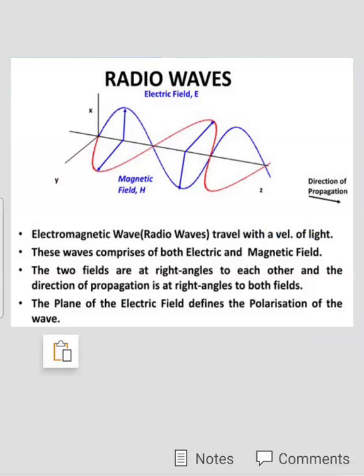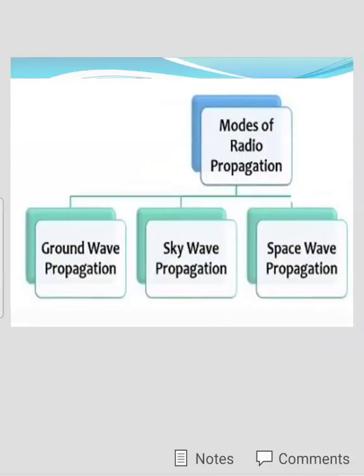Due to the high speed transmission we use radio wave communication. When these radio waves are transmitting from transmitter to receiver, the method of transmission of radio waves is called the propagation method. Now there are three types of propagation methods as shown in the above classification: first is ground wave propagation, second is sky wave propagation, and third is space wave propagation.